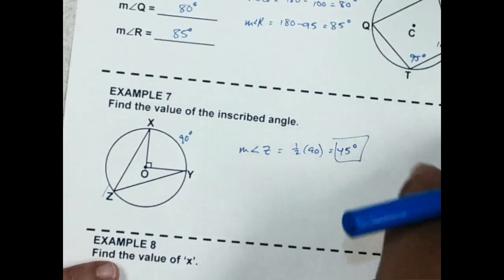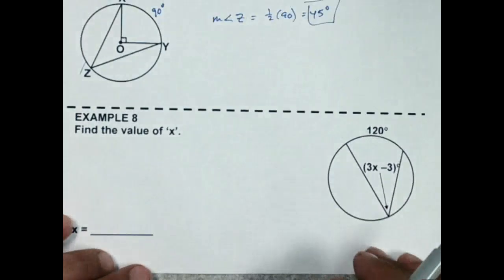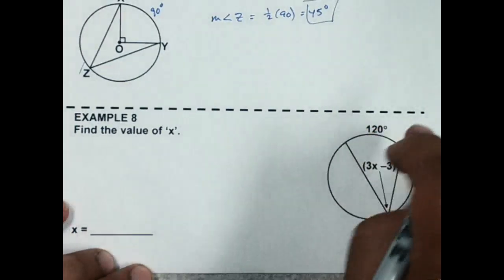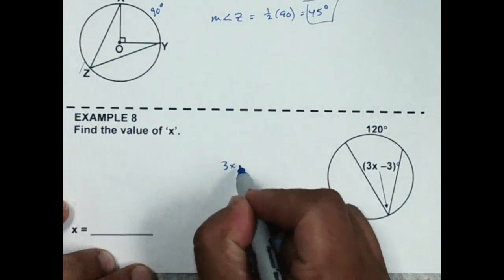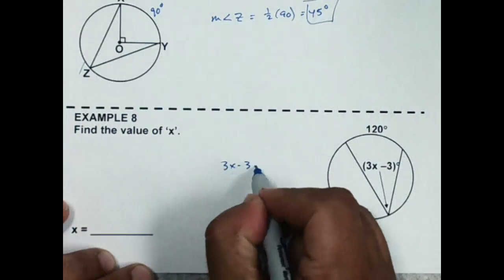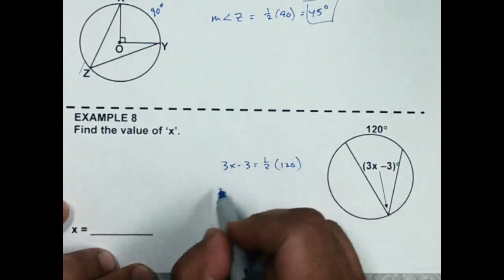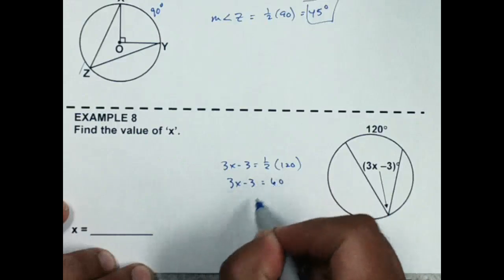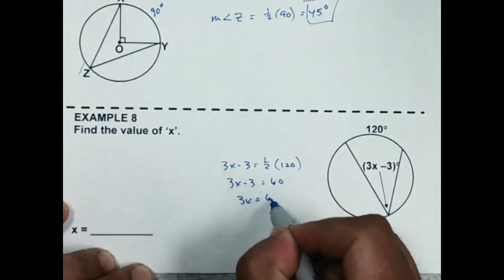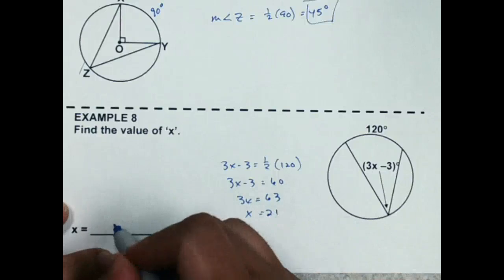In example 8, the arc is 120 degrees. The inscribed angle is half the arc, so 3X − 3 = 60. That gives 3X = 63, and dividing by 3, X = 21.